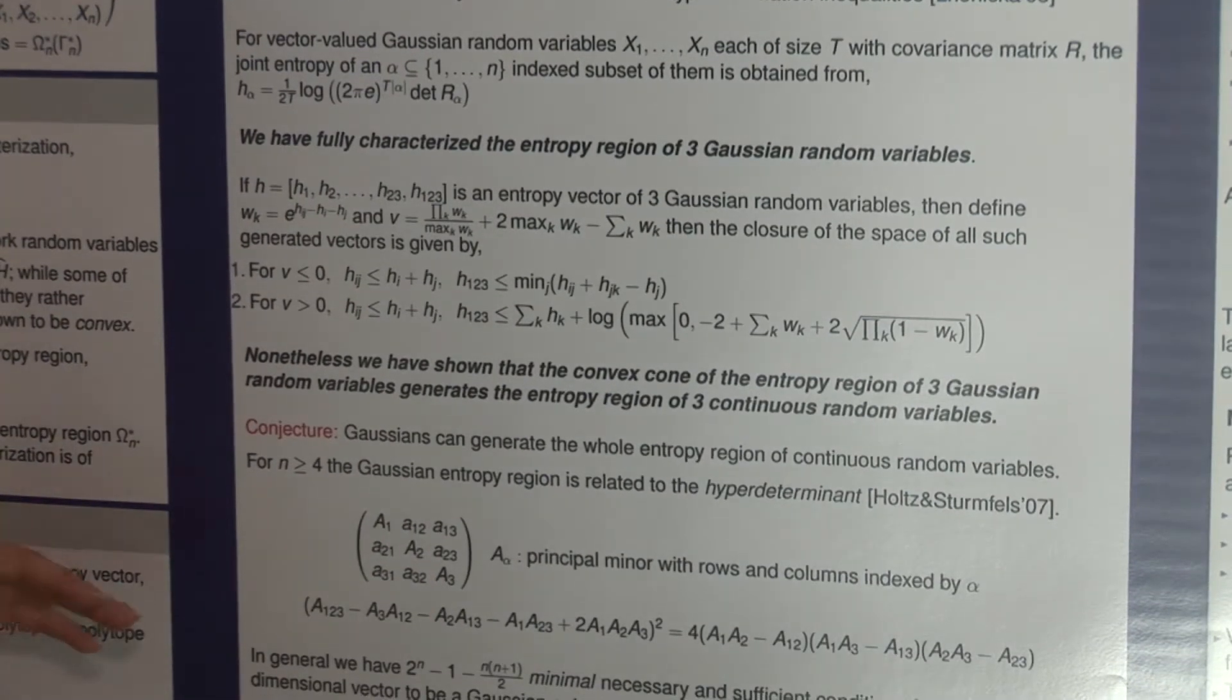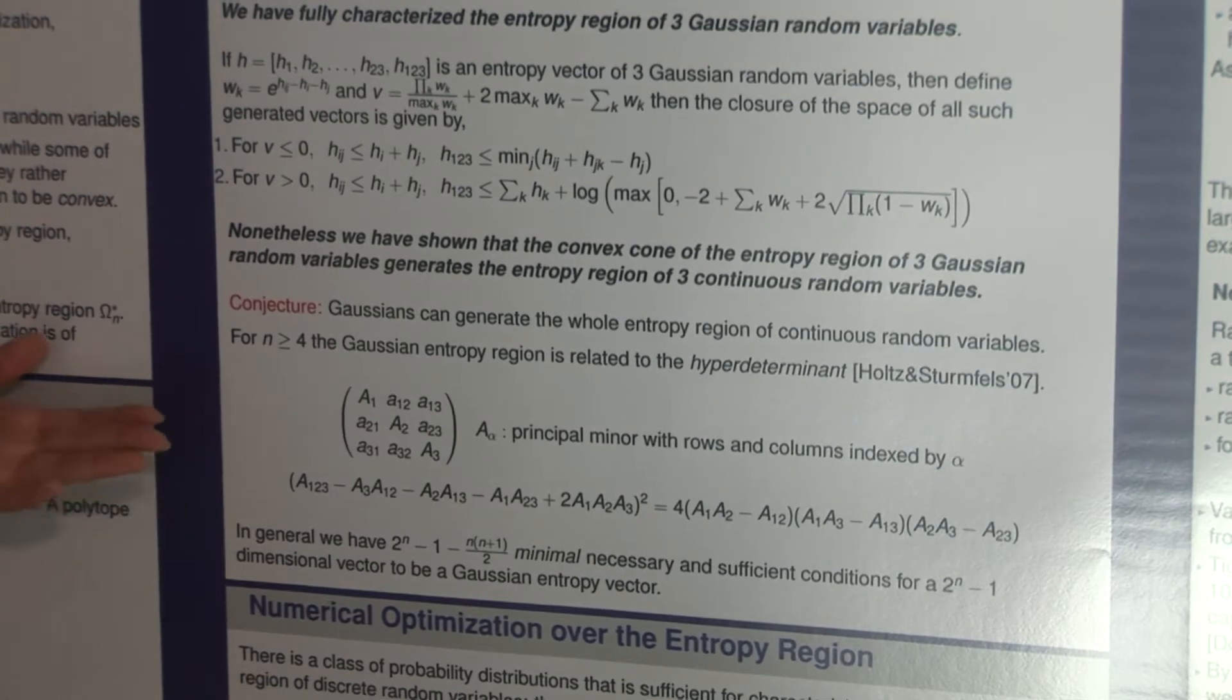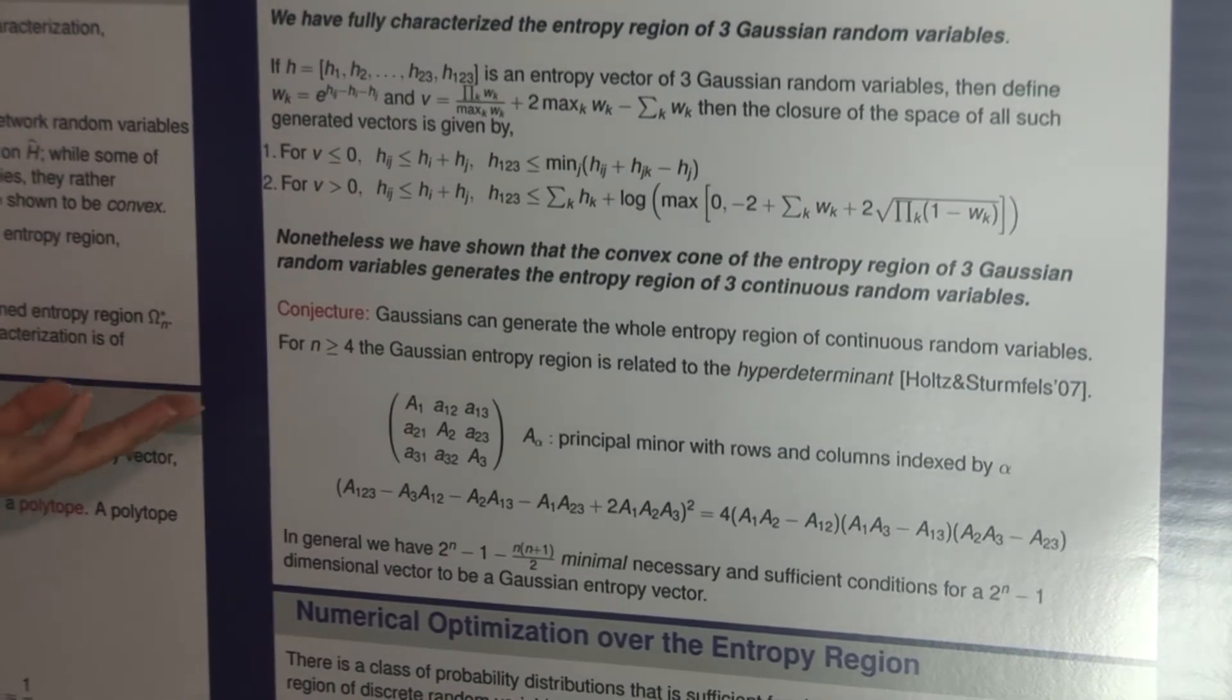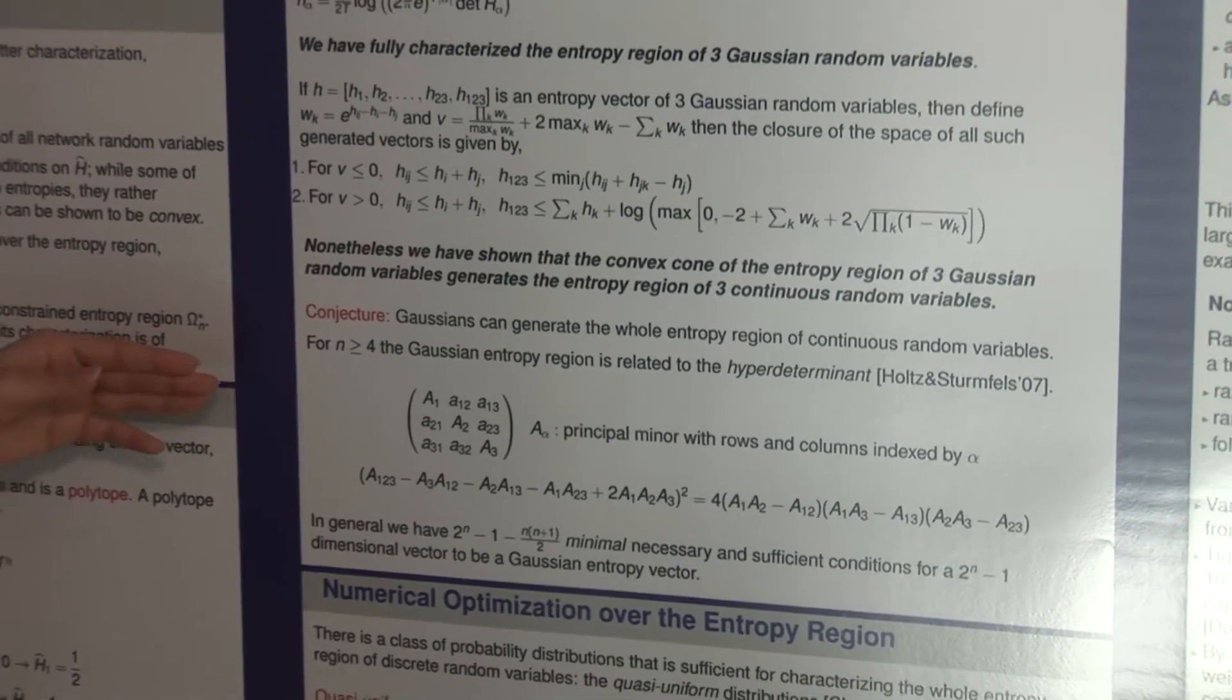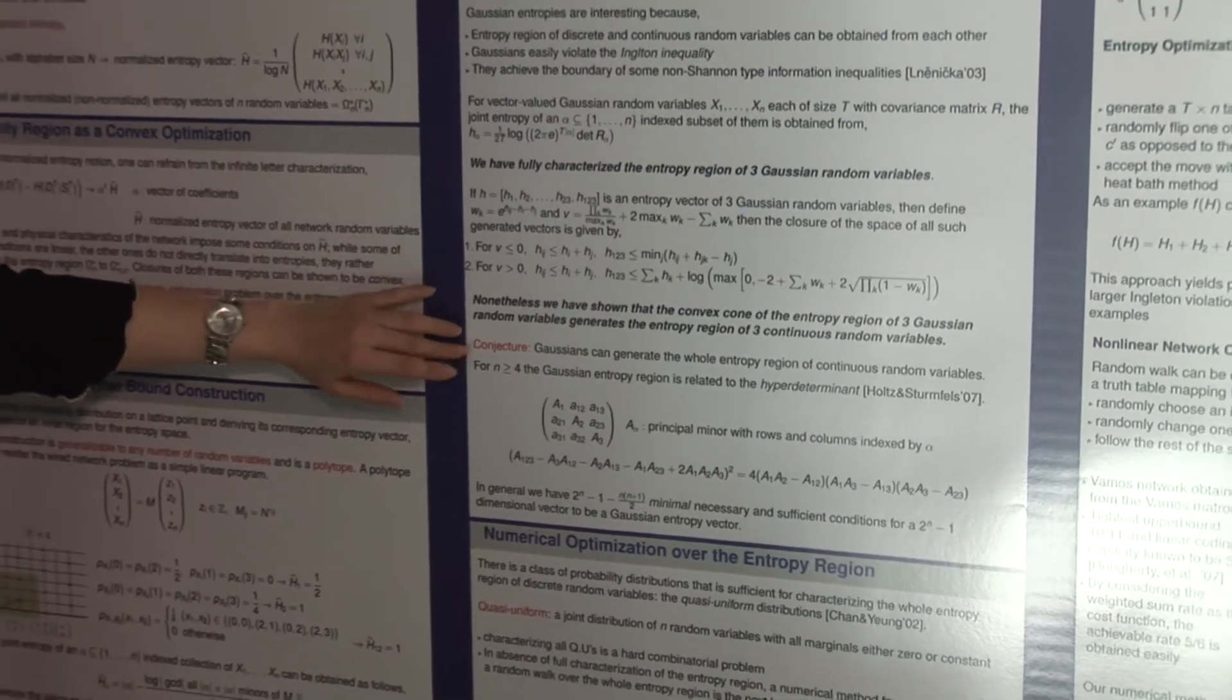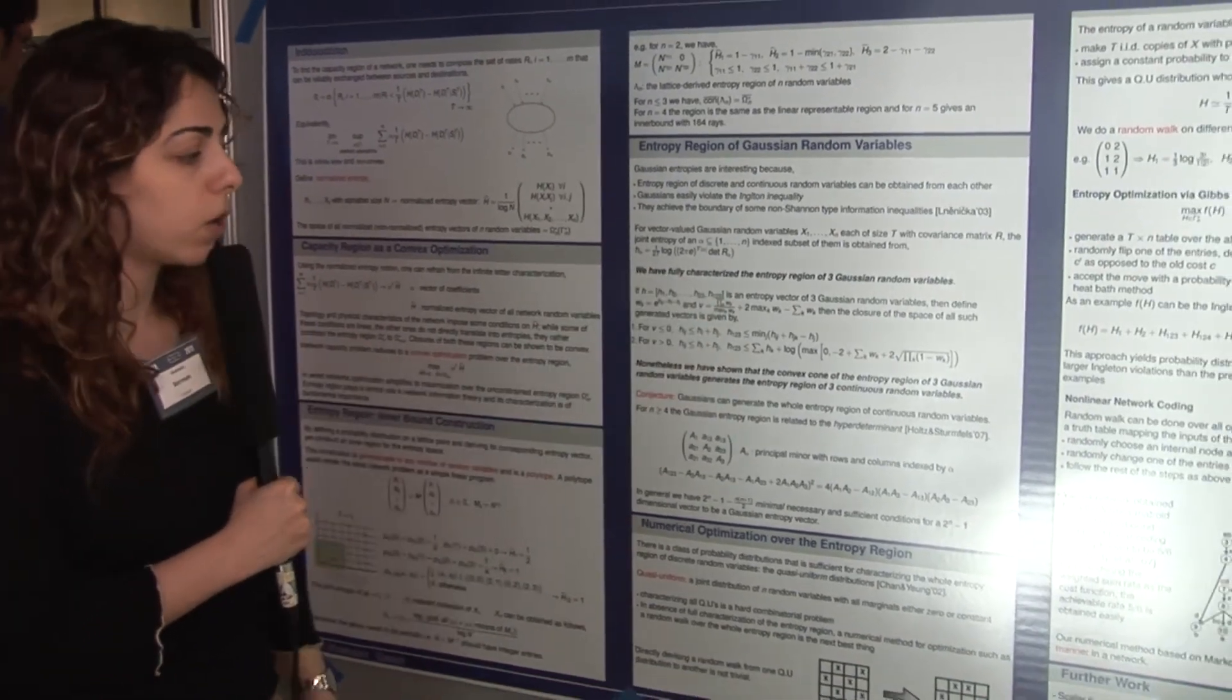For more than three random variables we have the minimal number of necessary and sufficient conditions for a vector to correspond to a vector of Gaussian random variables. In order to calculate the entropy region of Gaussian random variables for more than three, we need to compute the convex cone. We conjecture that Gaussians in general will be enough and they can generate the whole entropy region.